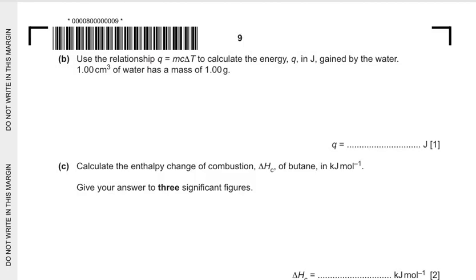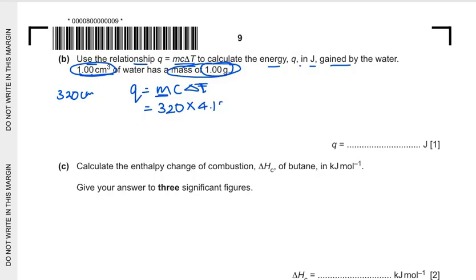Let's go ahead with the next part here. Use the relationship Q equals mc delta T to calculate the energy Q in joules gained by the water. 1 centimeter cube of water has a mass of 1 gram. Now m is the mass of the water taken off. We have taken 320 centimeter cube, so the mass of water is 320 gram into the specific heat of water that is 4.18 and the temperature change which was 57.3. On multiplication we get the value as 76,600 joules in three significant figures. This is the energy change which was related to the procedure here.